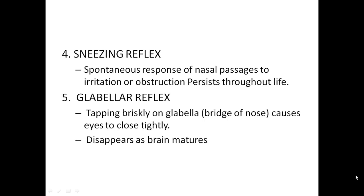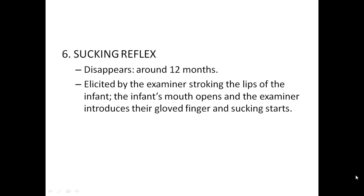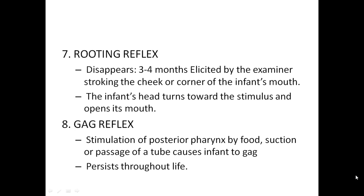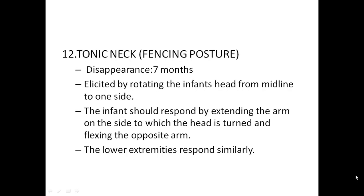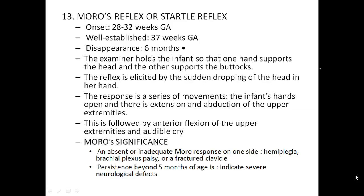Sneezing reflex. Glabella reflex: tapping briskly on the glabella causes the eyes to close tightly. Sucking reflex. Rooting reflex: disappears at 3 to 4 months, elicited by the examiner. Gag reflex: stimulation of the posterior pharynx. Extrusion reflex: when the tongue is touched or depressed, the infant responds by forcing it outward. Palmar grasp reflex. Tonic neck reflex, also called the fencing posture: disappears by 7 months, elicited by rotating the infant's head from midline to one side, with the lower extremity responding similarly.